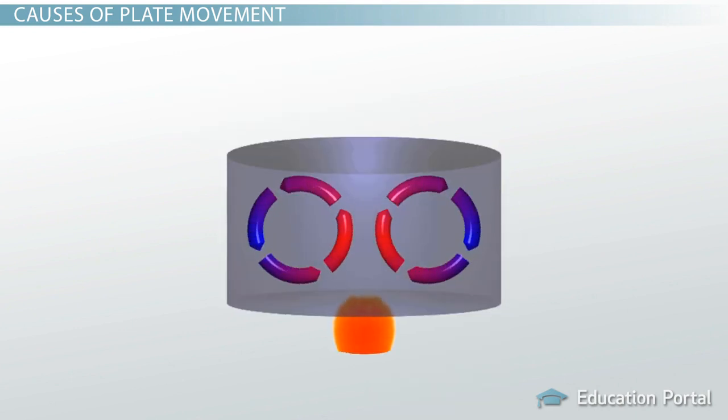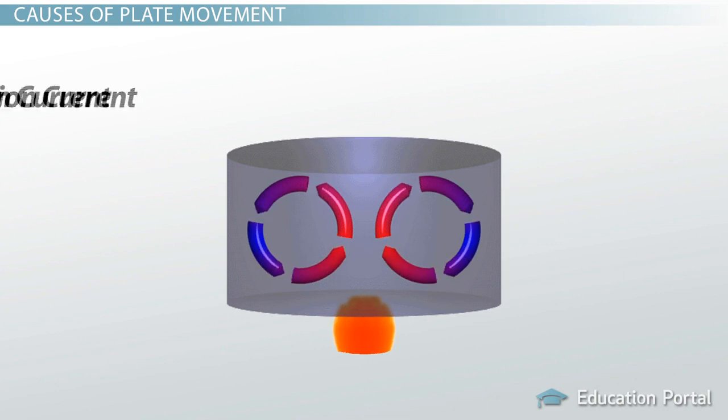The rock near the mantle is heated and rises toward the crust. The rock near the surface is cooler and sinks back down toward the core. This forms the same type of convection current which causes the plates to move. Scientists believe that this cycle takes thousands of years to complete.